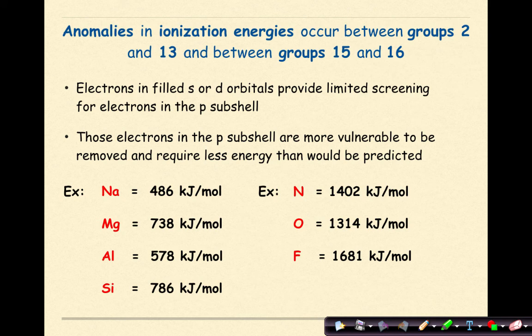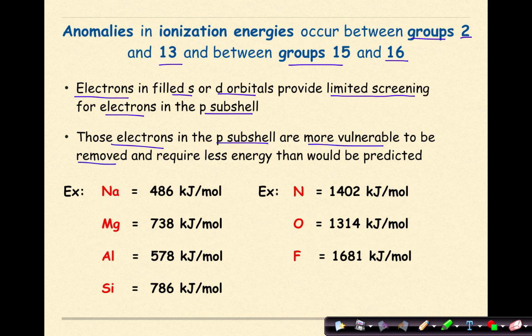Anomalies in ionization energies occur between groups 2 and 13 and groups 15 and 16. Electrons in filled S or D orbitals provide limited screening for electrons in the P subshell. Those electrons in the P subshell are more vulnerable to be removed and require less energy than would be predicted.